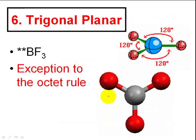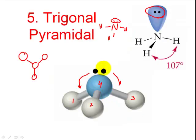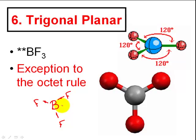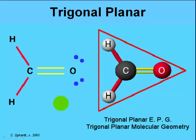Trigonal planar is the same as trigonal pyramidal, except it doesn't have that unshared pair. When I remove those electrons from the top, the whole structure ends up being flat — a trigonal planar structure. You'll really only see this when boron, which has three outer-shell electrons, bonds with another element, such as in BF3. Any time boron bonds, the key is that on the central atom there are no extra unshared electrons — giving a trigonal planar structure with three areas of electron negativity spreading as far apart as possible.